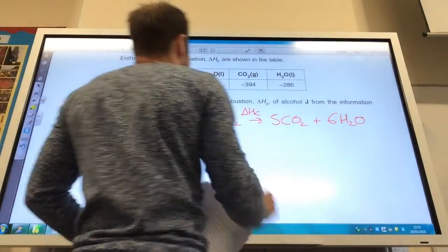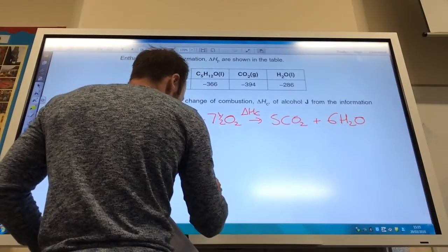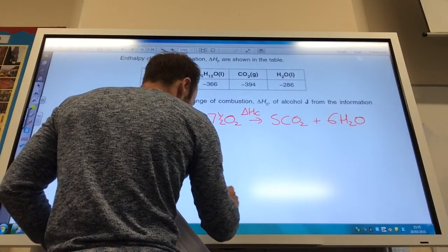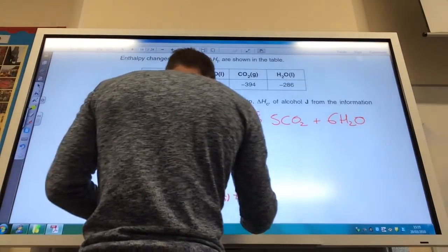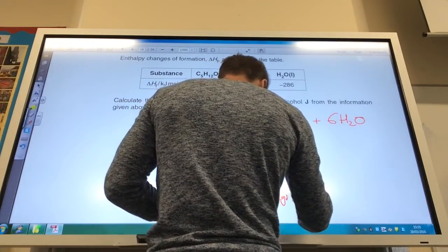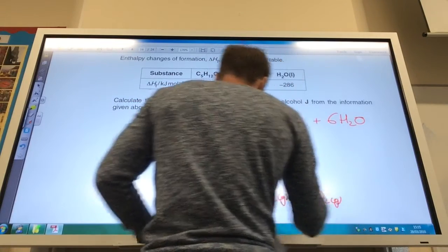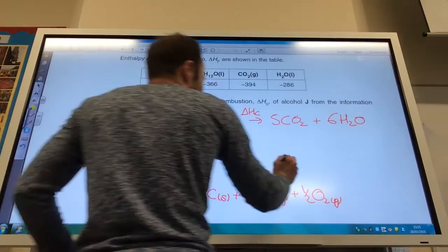So, that's what I want to find, and I've been given formation data. So, down here must go my elements. So, five carbons plus six H2 plus a half O2 down there, and my arrows go up.